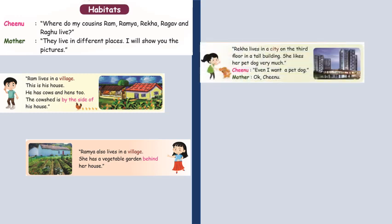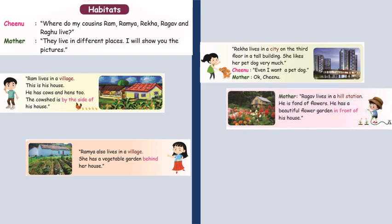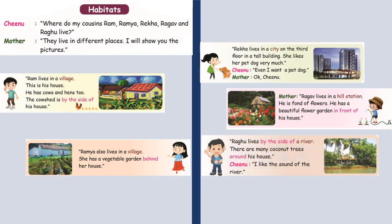Rekha lives in a city on the third floor in a tall building. She likes her pet dog very much. Even I want a pet dog. Okay, Chino. Raghu lives in a hill station. He is fond of flowers. He has a beautiful flower garden in front of his house. Raghu lives by the side of a river. There are many coconut trees around his house. I like the sound of the river.